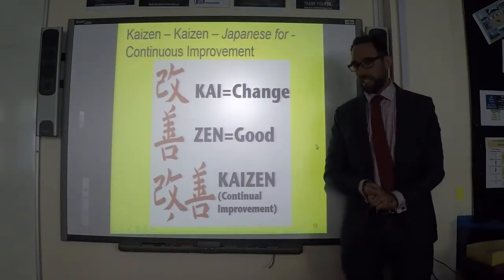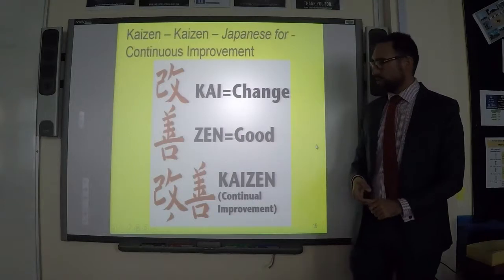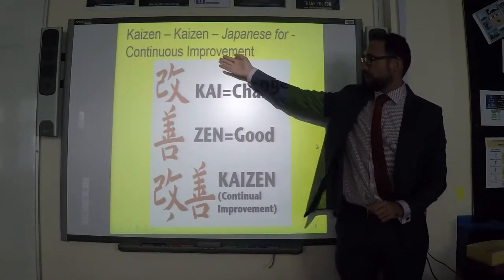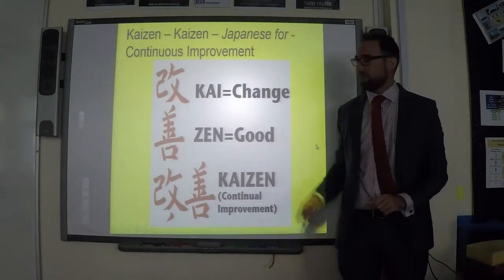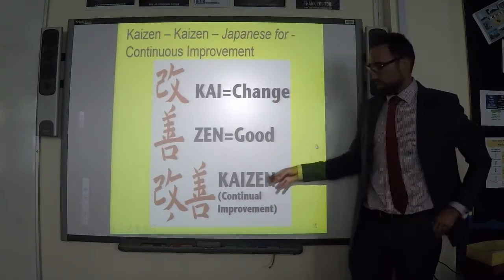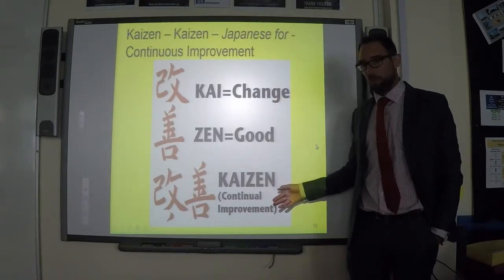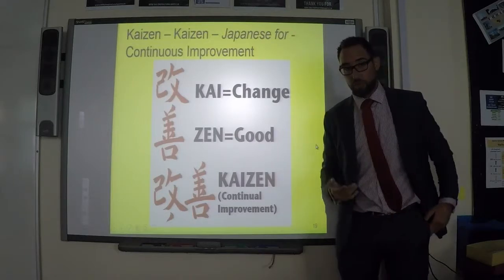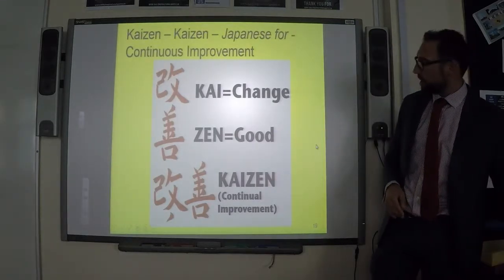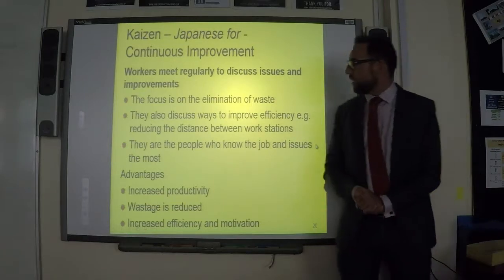Next we have Kaizen, which means continuous improvement — it's Japanese for continuous improvement. It's believed Toyota came up with this concept. Continuous improvement basically means becoming more efficient, so Kaizen and lean production are very much linked.